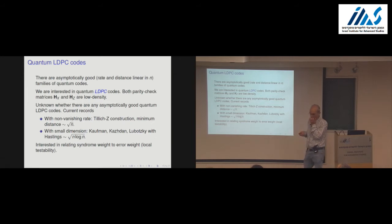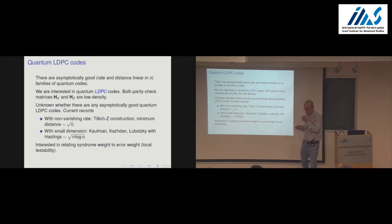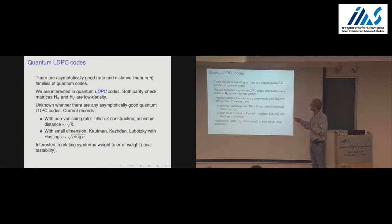If you take Gallager's code and try to repeat these arguments, what goes wrong is that Gallager's codes are too good. If you take one parity check matrix to define an LDPC code, the code that comes with it is typically too good — it has large minimum distance. That means in the dual of H_X we have no small-weight codewords at all, but we need small-weight codewords to put in the other matrix. So the challenge is that all the random methods that work so well in the classical case collapse completely in the quantum case, because we need to construct both low-density matrices simultaneously.